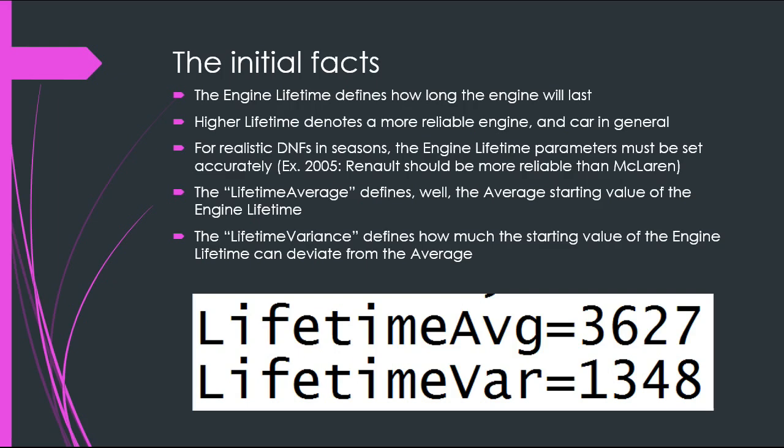If you want realistic DNFs in a season, the engine lifetime parameter must be set accurately. For example, in 2005, Renaults should be more reliable than the McLarens were — the McLarens were breaking down plenty often while the Renaults were pretty indestructible. Same with the Ferraris in the early 2000s.